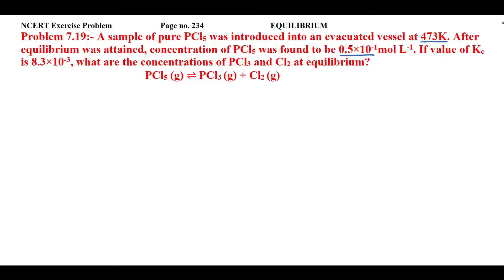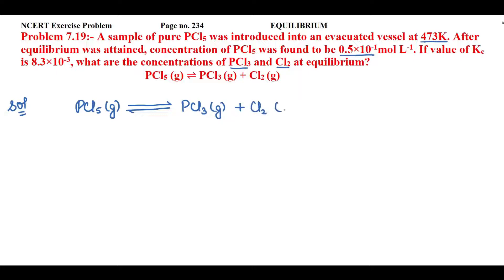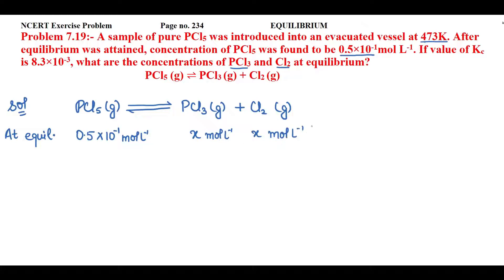We need to find the concentrations of PCl₃ and Cl₂ at equilibrium. For this, first let's write the reaction: PCl₅(g) → PCl₃(g) + Cl₂(g). They have directly talked about the equilibrium state only, with no mention of initial concentration. At equilibrium, PCl₅ is 0.5 × 10⁻¹ mol/L. Since 1 mol PCl₅ forms 1 mol PCl₃ and 1 mol Cl₂, let the concentrations of PCl₃ and Cl₂ each be x mol/L.